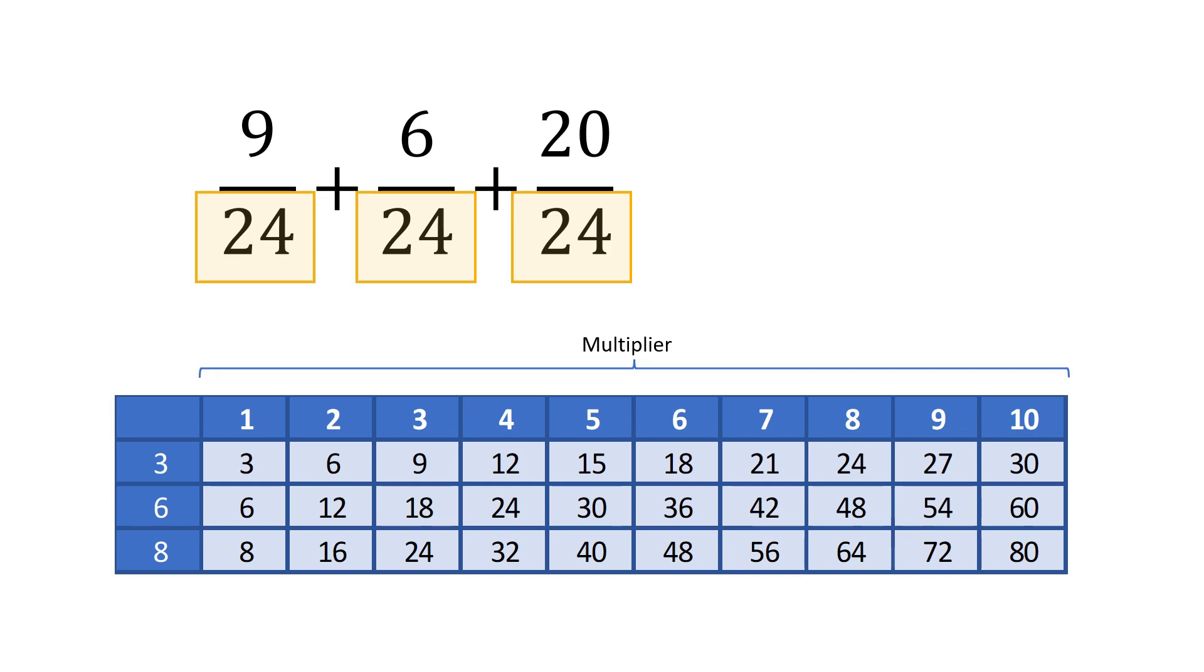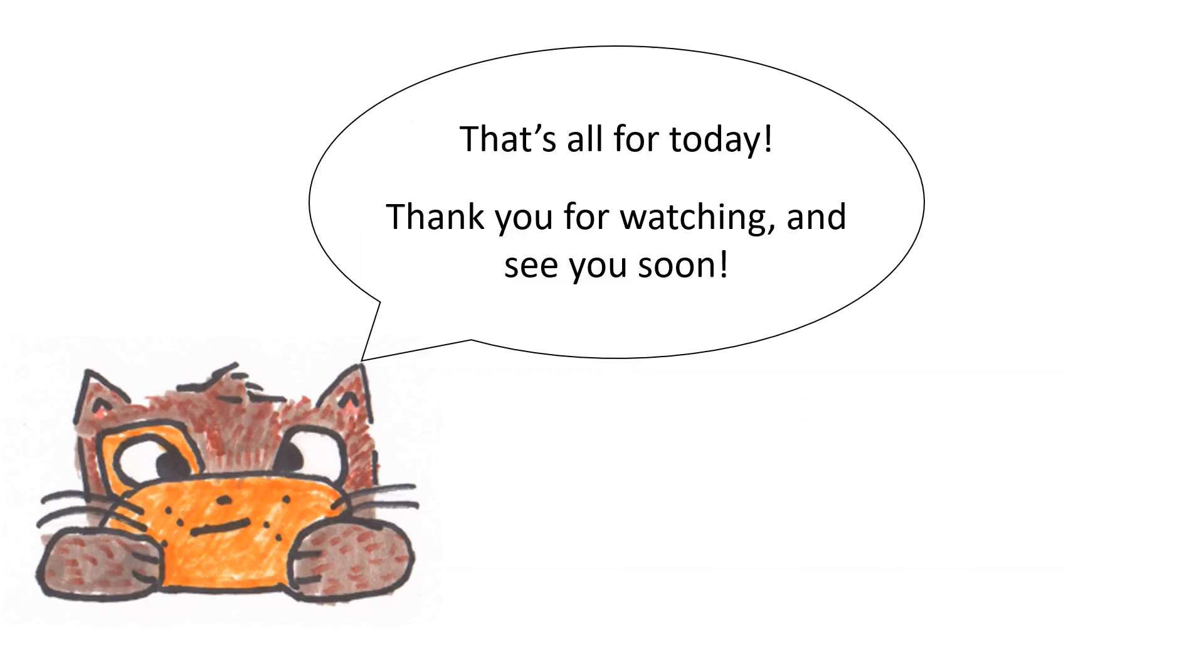9 plus 6 plus 20 is 35. We have 35 in the numerator and 24 in the denominator. So we have 35 over 24 or 1 and 11 twenty-fourths. That's all for today.